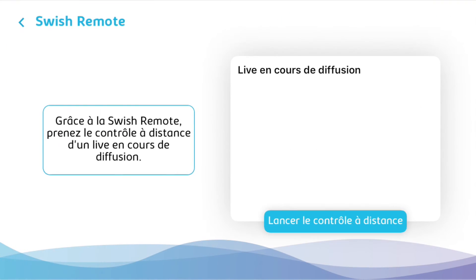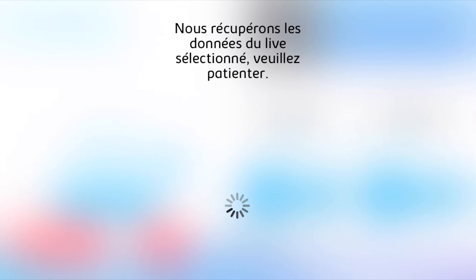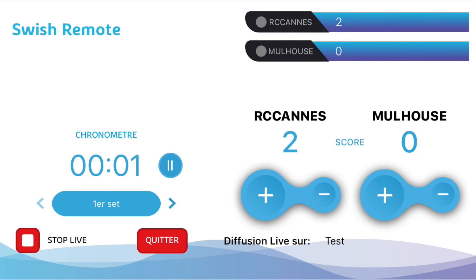Once you click on Swish Remote, you'll come to a page showing a list of all the lives that have been launched from a Facebook page for which you are the administrator. Let's click on the match 'RC CAN versus Milouz,' which I've already set up on another phone.